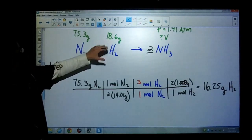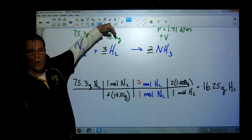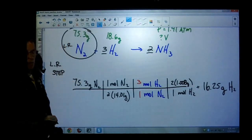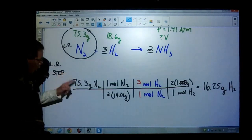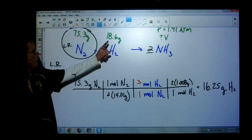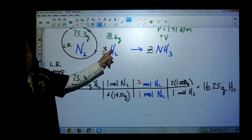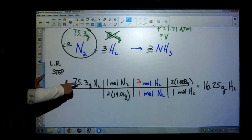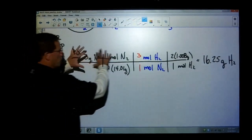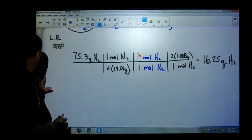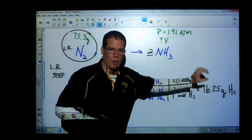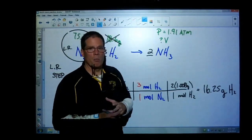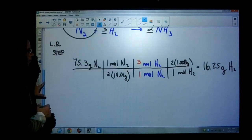If I used all 75.3 grams of nitrogen, I would need 16.25 grams of hydrogen to completely use it up. How much do I have? I have more — 18.6 grams. So I will use all my nitrogen and have a little over 2 grams of hydrogen remaining. Since I'll have leftover hydrogen, my limiting reactant is nitrogen. This step only tells me which value to use; I don't do anything with the 16.25 gram number.